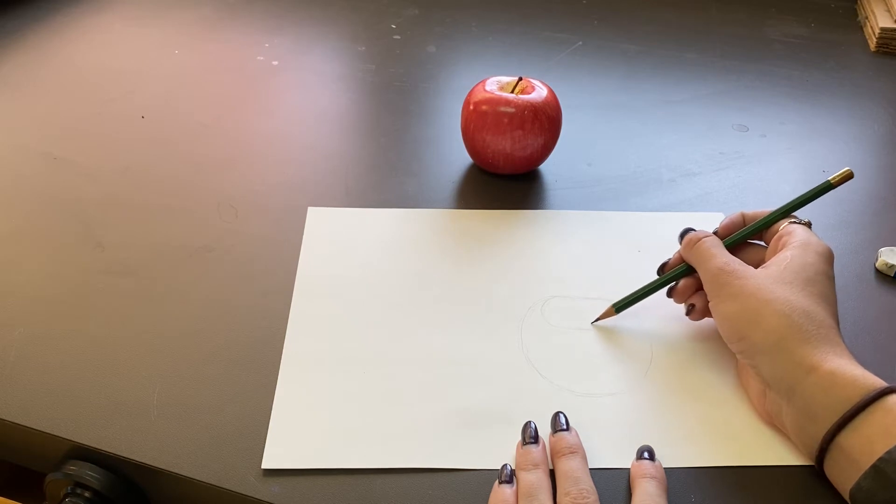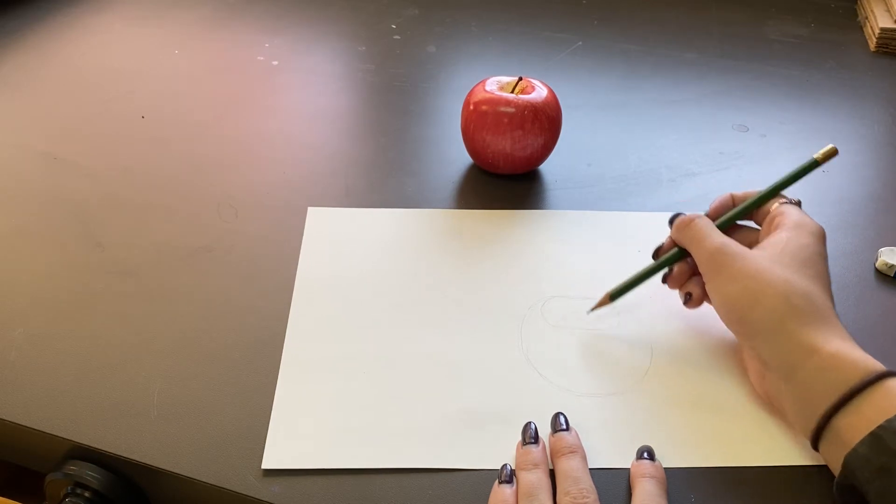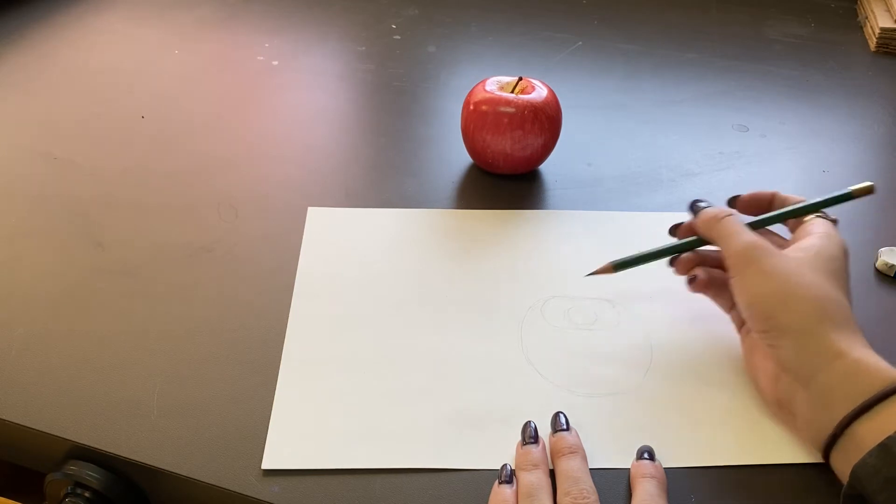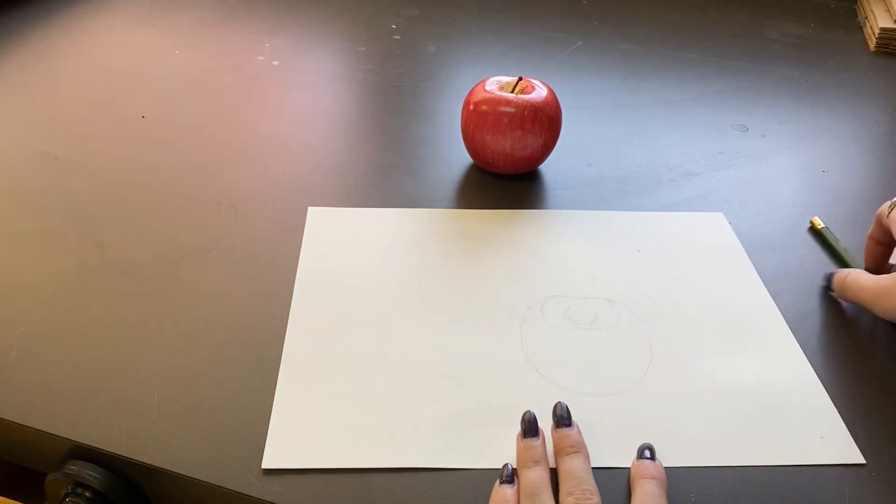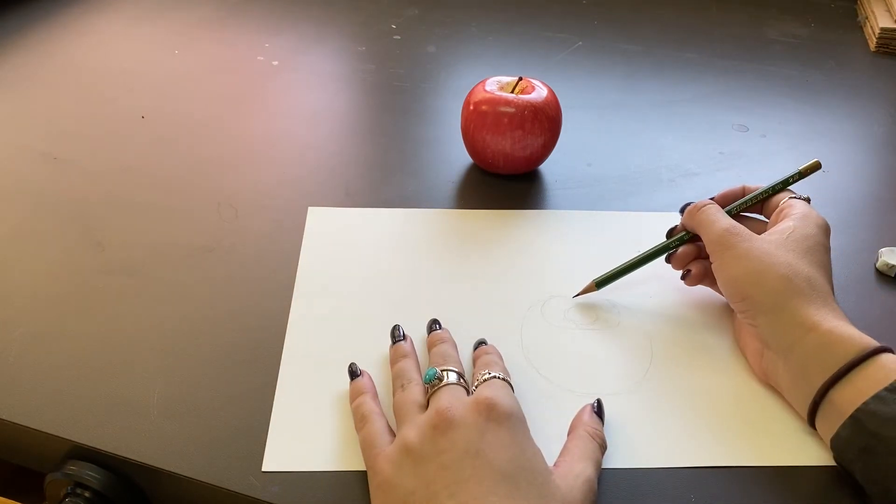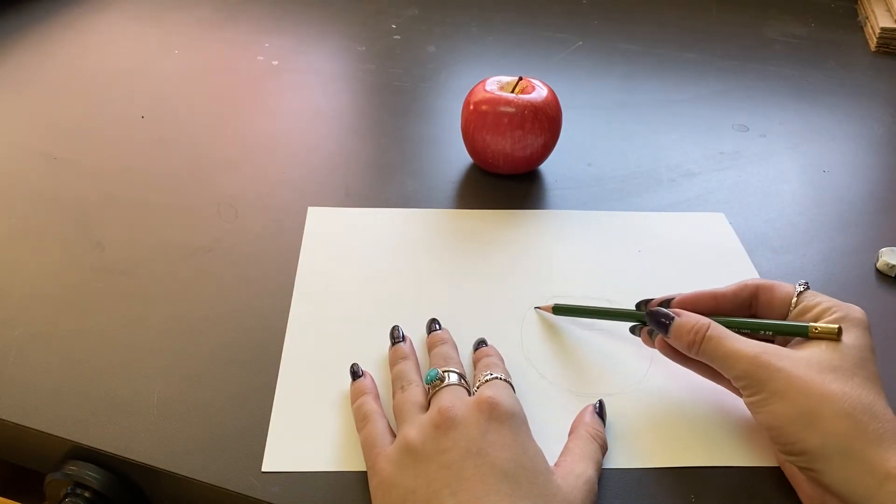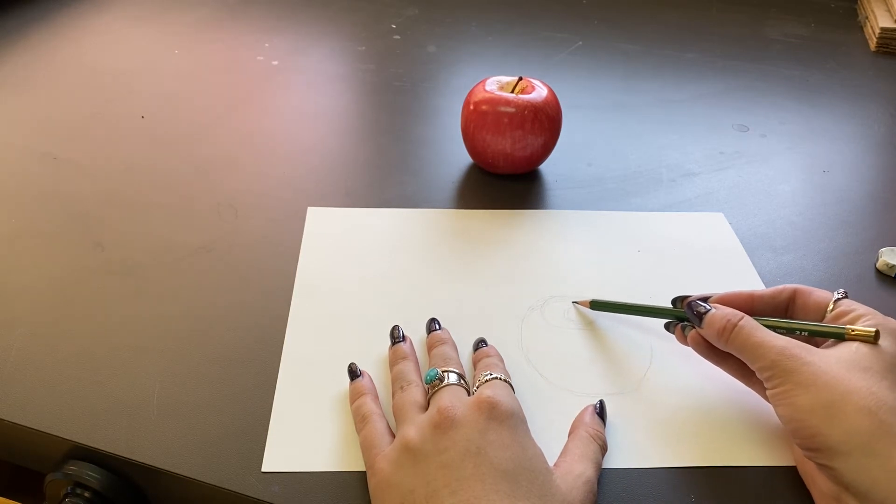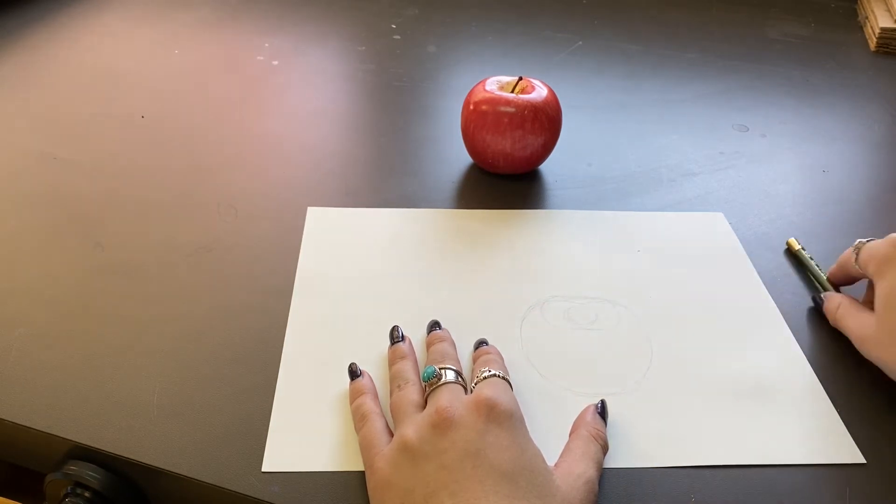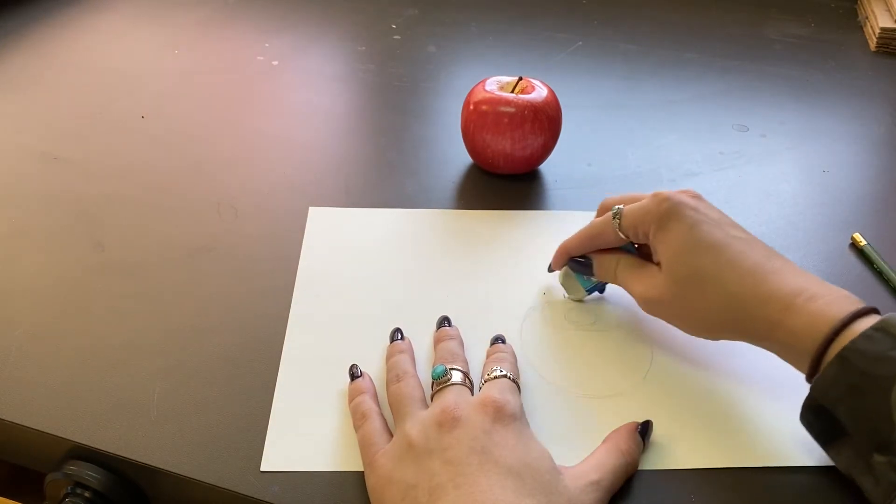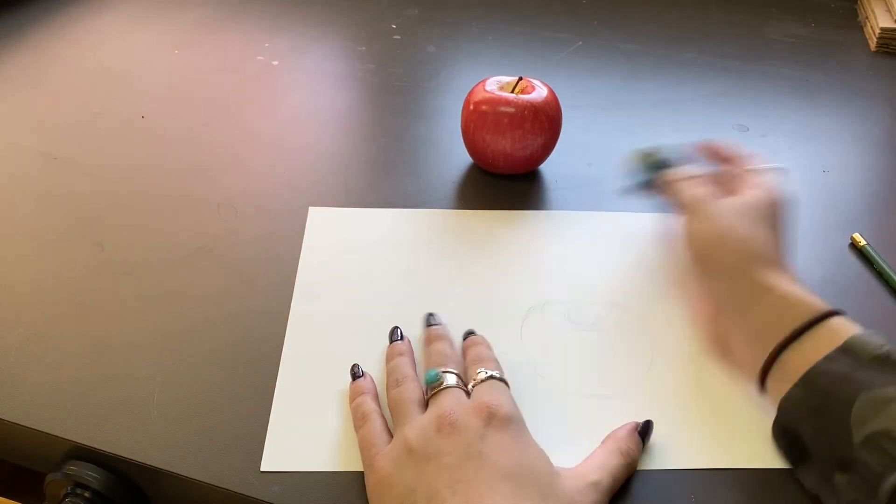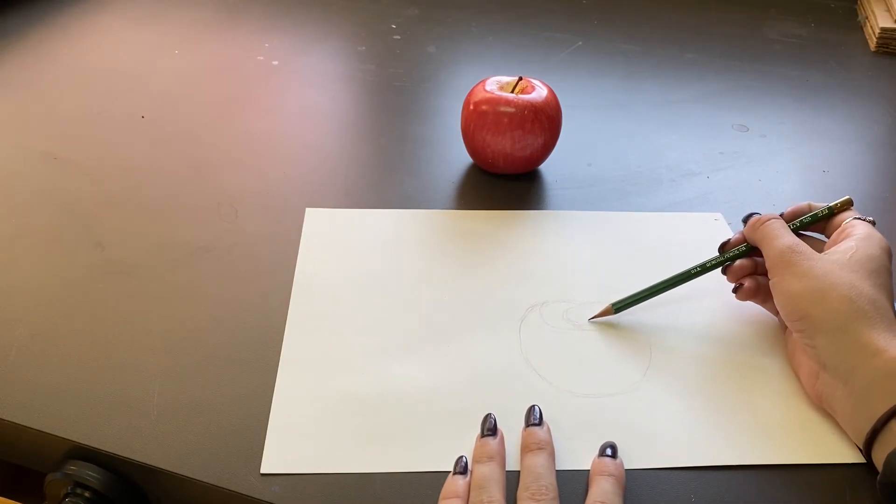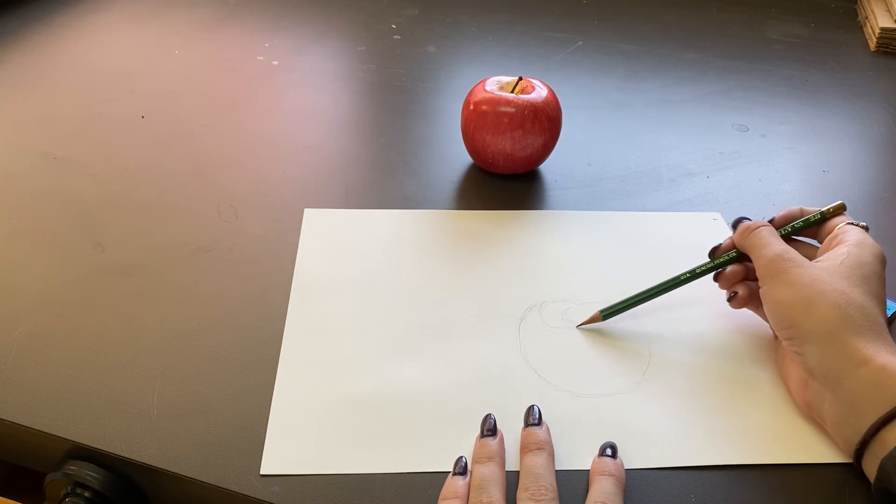When you draw press lightly and you can say to yourself draw light until you get it right. That will help in case you need to erase any marks. Since this is our first time, that is so normal. I always have to erase and just keep trying until I get the shape that I like. That is a whole part of the drawing process. That's totally normal. So just keep going.